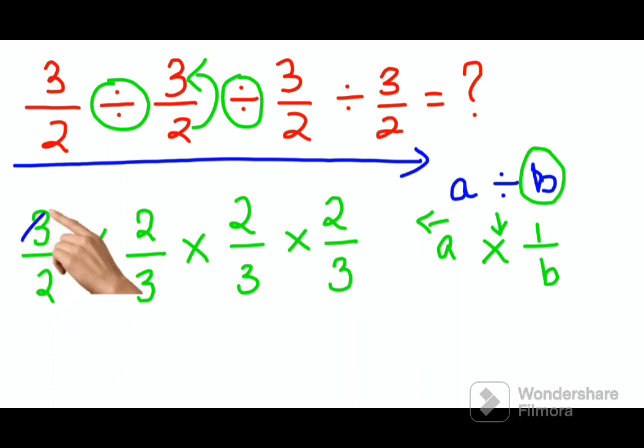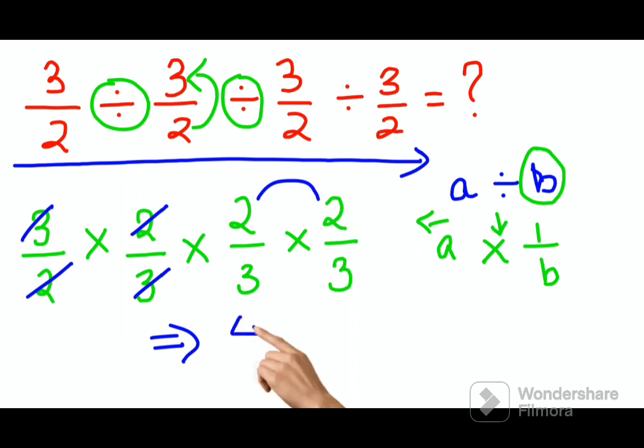Now you can see things are getting cancelled. So final answer for this one is 2 into 2 that is 4 upon 3 into 3 that is 9.